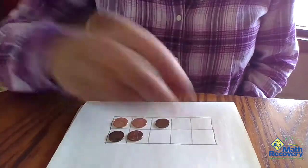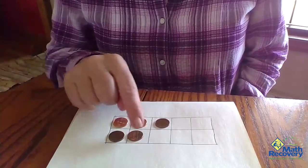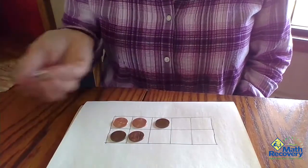I rolled a one, put it there. Now I could look at this and say, I have five, I need five.